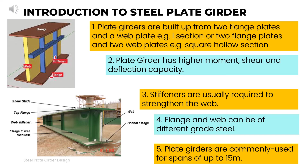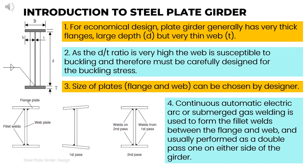Plate girders have higher moment, shear, and deflection capacity. The flange and web can be of different grade steel. The size of plates consisting of flange and web can be chosen by the designer. Plate girders are commonly used for spans of up to 15 meters for economical design.